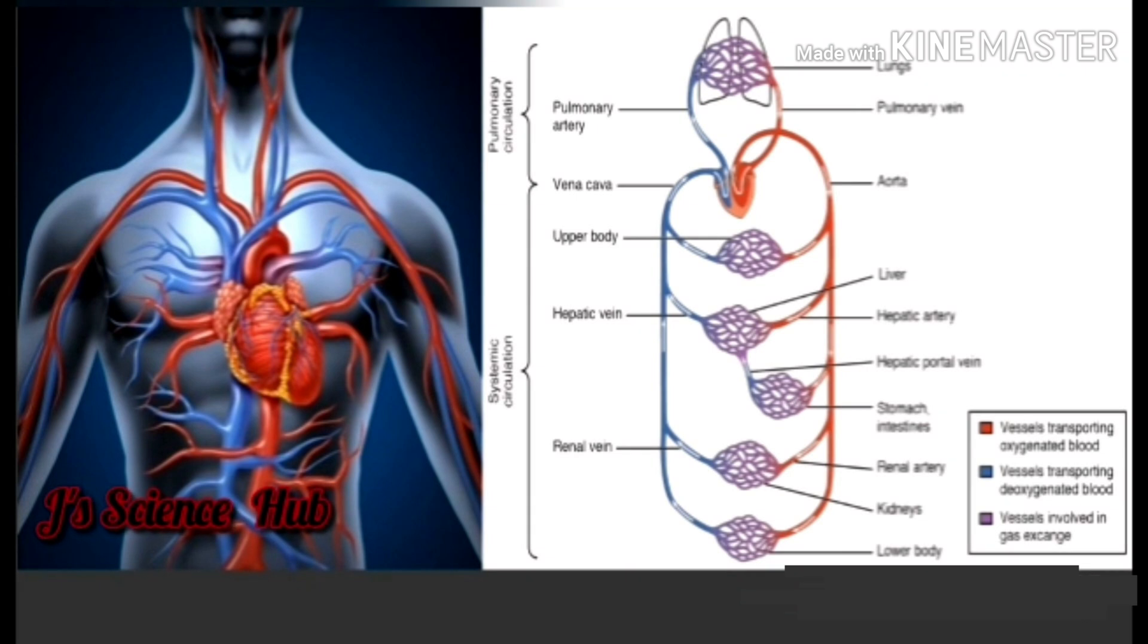The circulation which includes the lungs is known as pulmonary circulation and the circulation of blood to the whole part of the body is known as systemic circulation. Right ventricle exerts the push for the pulmonary circulation while the left ventricle exerts the pressure for the systemic circulation.